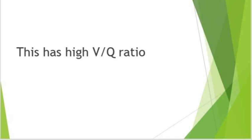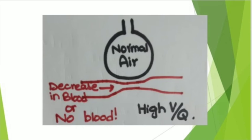Physiological dead space is the abnormal dead space, caused by a decrease in perfusion of alveoli that have normal ventilation. This results in a high ventilation-to-perfusion ratio, because ventilation is normal but perfusion is decreased. These are alveoli that have normal air but decreased blood supply.